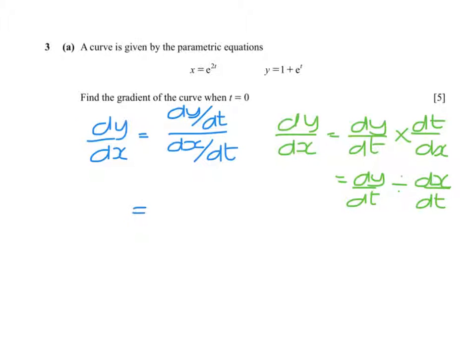So dy/dt - 1 differentiates to give 0, and e to the t differentiates to give e to the t, and dx/dt is 2e to the 2t.